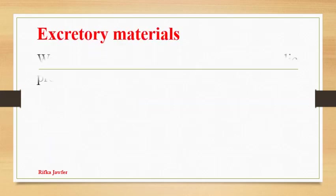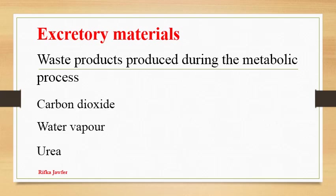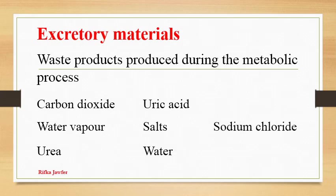Excretory materials are waste products produced during the metabolic process. Carbon dioxide, water vapour, urea, uric acid, salts, water and sodium chloride are some excretory materials produced in the human body.